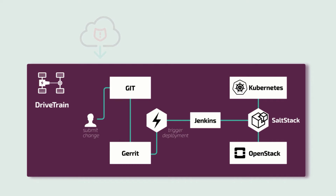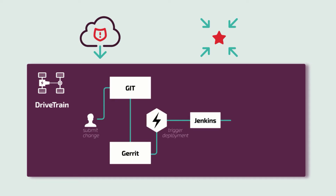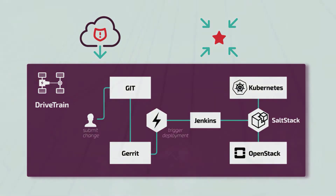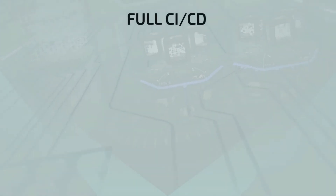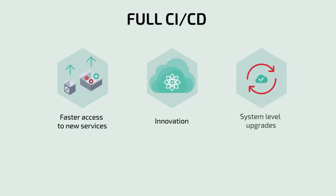Seamless updates like adding security patches and new feature functionality come through an automated pipeline to a virtualized control plane to minimize downtime. In the future, Drivetrain infrastructure will expand beyond updates to enable full CICD to provide faster access to new services, innovation, and system-level upgrades without any downtime.